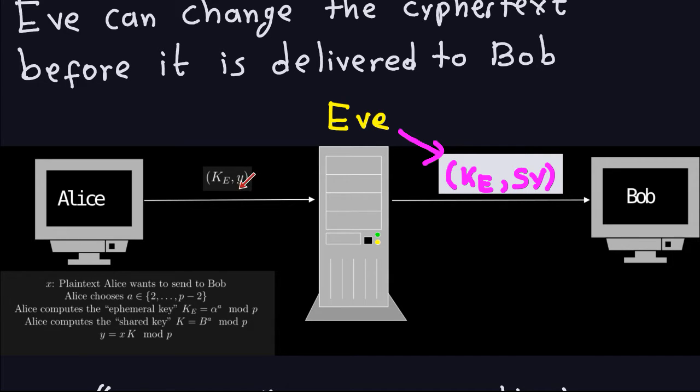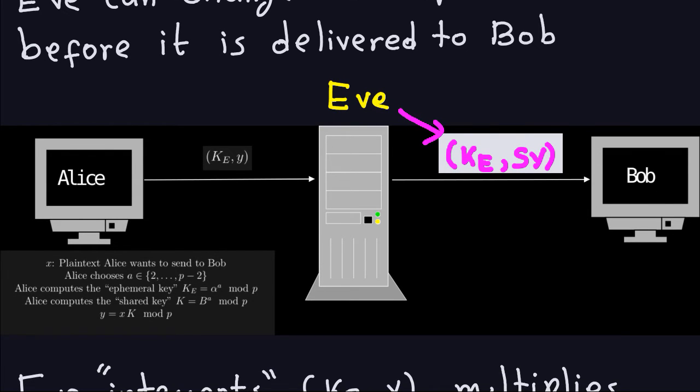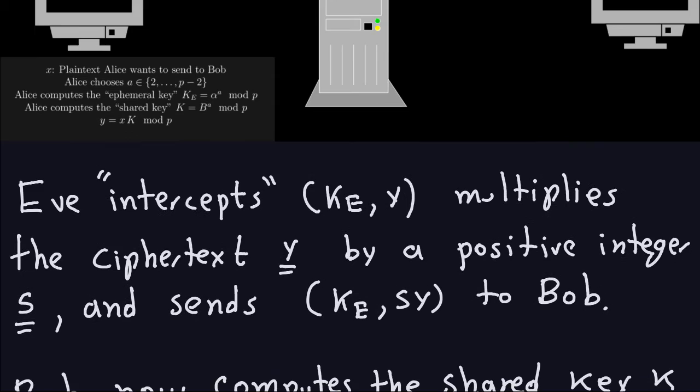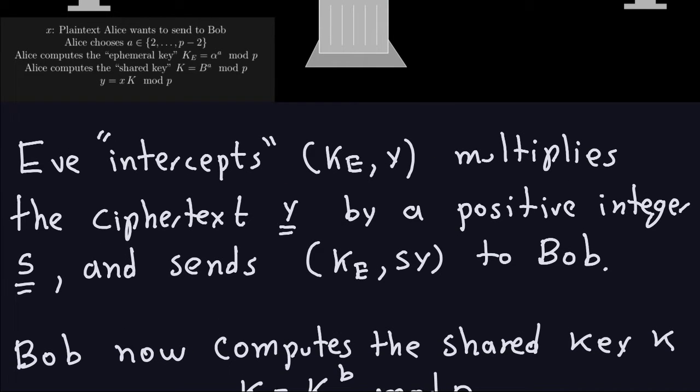And that would be pretty bad, for example, if this was a money transaction. If Y was the amount of money, then Eve could easily change that like twice or three times or whatever number she wants to put in there. So she can transform the ciphertext. So Eve intercepts this, multiplies the ciphertext Y by a positive integer and sends the changed ciphertext together with the ephemeral key to Bob. Now the ephemeral key is not changed in this case. There is no need to change it.